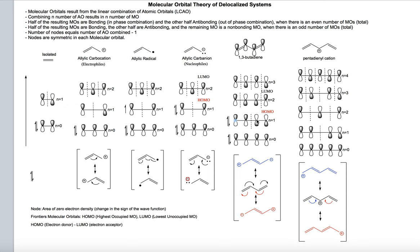If butadiene reacts as an electron donor, this HOMO orbital is what it will use for donating electrons.